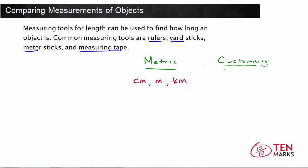Now for the customary system, the units include inches, abbreviated IN, then you have feet, which is the next longer unit, and then you have yards, and lastly, you can have miles.